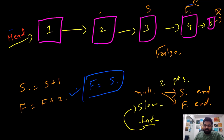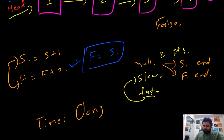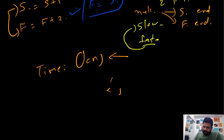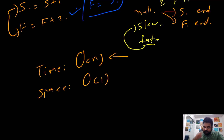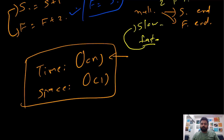This is the most optimal solution for this problem — very easy and trivial to understand once you get the trick. If we calculate the time and space complexity: the time complexity is O(N) because in any case we will have to iterate over all the nodes. In terms of space complexity, apart from using a couple of additional variables, we are not using any more space. So the space complexity is constant — O(1) — and this is the most optimal approach.